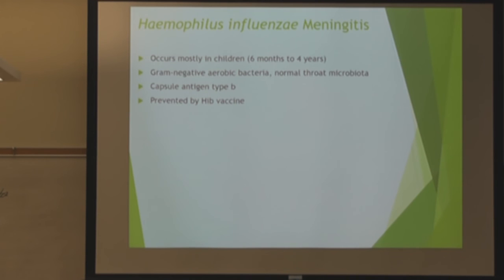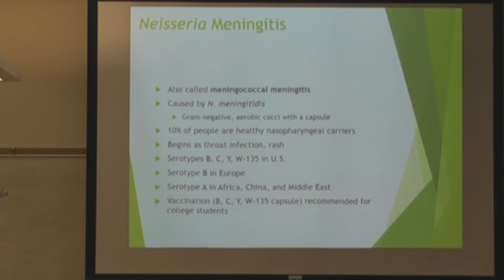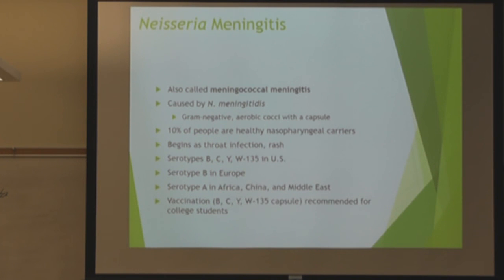Haemophilus influenzae occurs mostly in children, but the Hib vaccine has greatly reduced numbers. In countries without the vaccine, it's still a major issue. It's gram-negative and is also normal throat microbiota — your biggest offender is antigen type B. Neisseria meningitidis is gram-negative, has a capsule, and 10% of people are carriers. It usually begins as a throat infection with a rash. You don't need to know the serotypes or vaccine details.